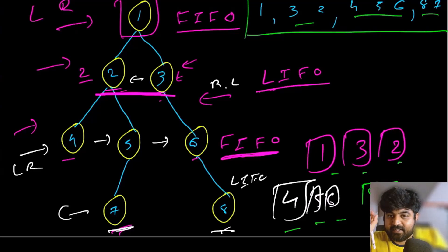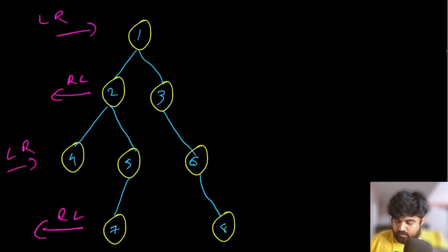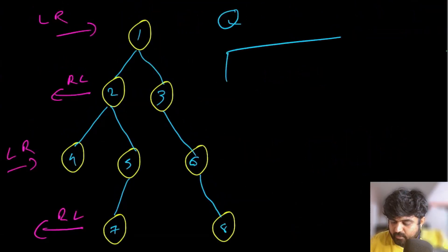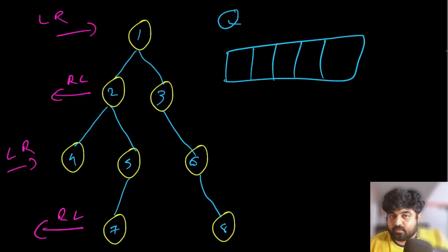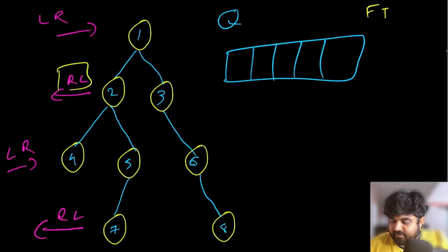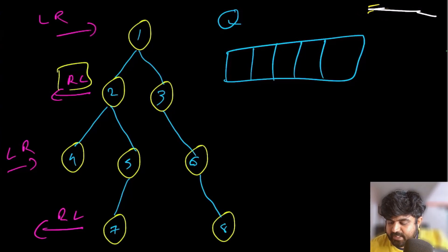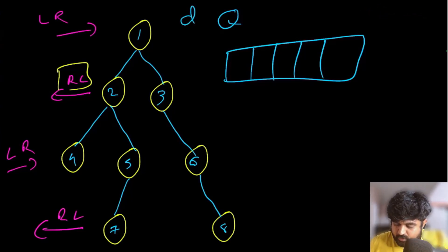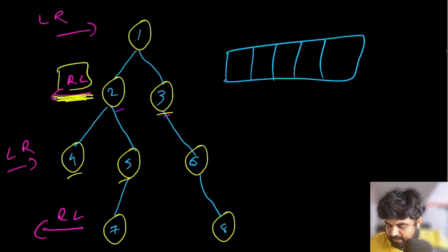The data structure that supports both FIFO and LIFO is a deque. By alternating between popping from the front and popping from the end, we can flip between the two principles. This is available in both Java and Python.